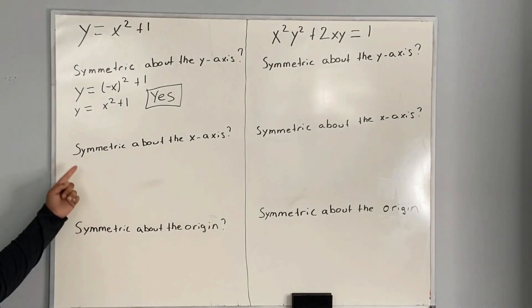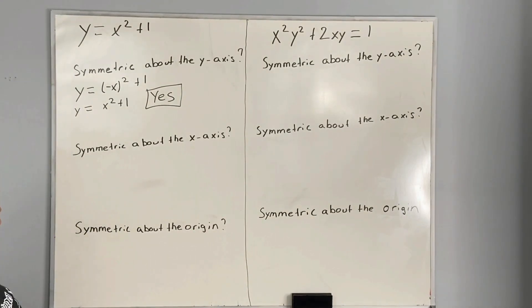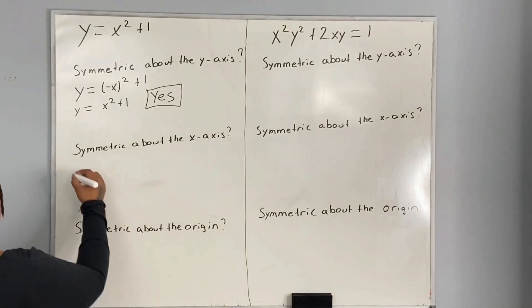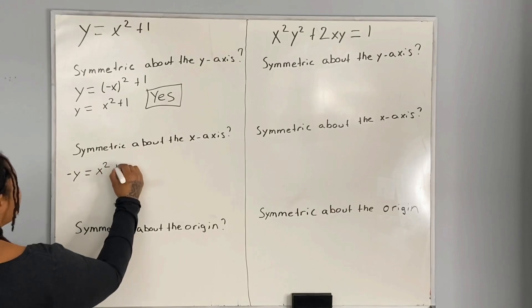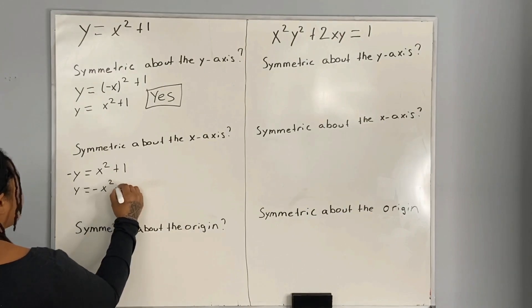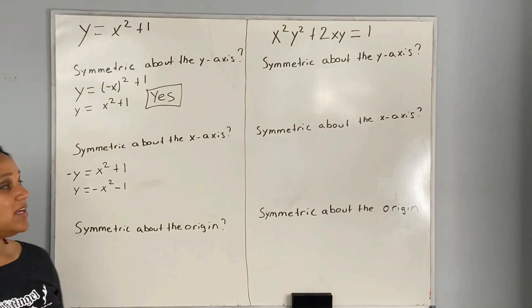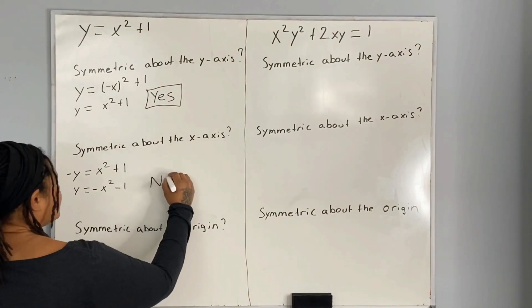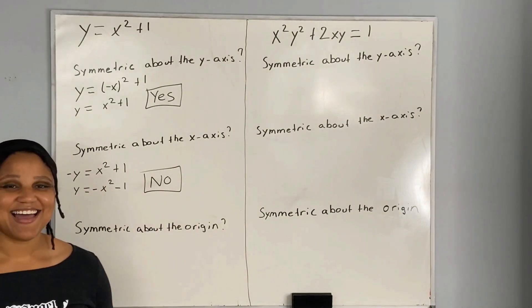Now we want to check to see if the graph of the equation is symmetric about the x-axis. In order to do that, we replace y with negative y and see if we get the original equation. So negative y is equal to x squared plus 1, which gives us y is equal to negative x squared minus 1. Since we do not get the original equation, it is not symmetric about the x-axis.